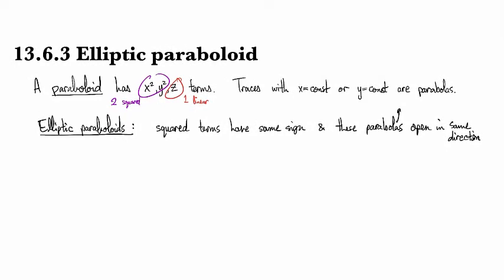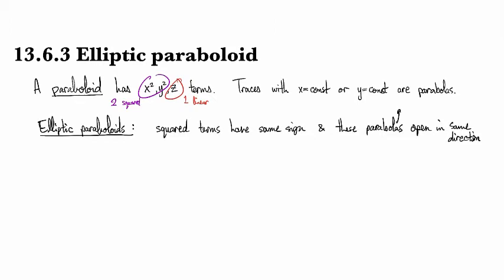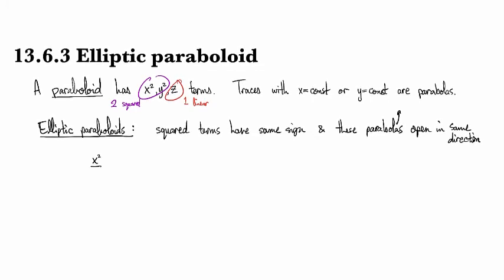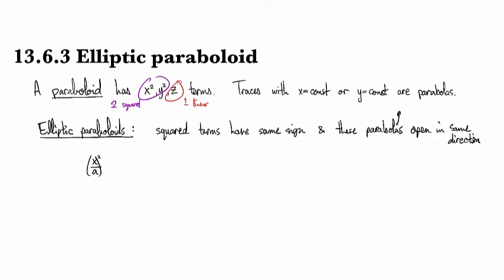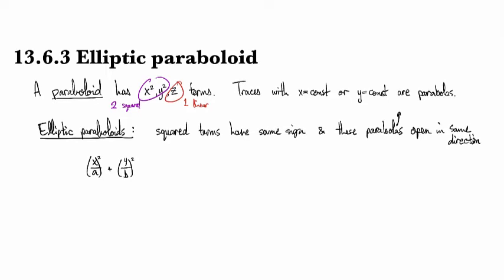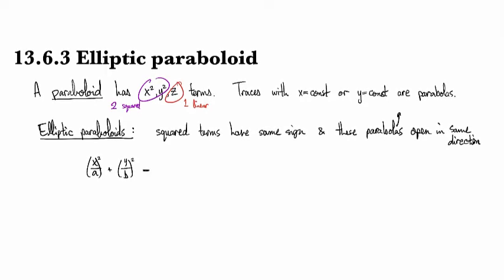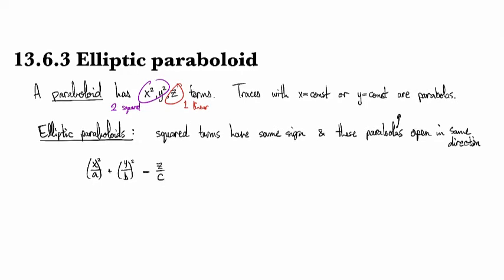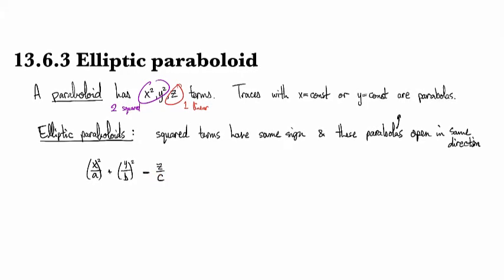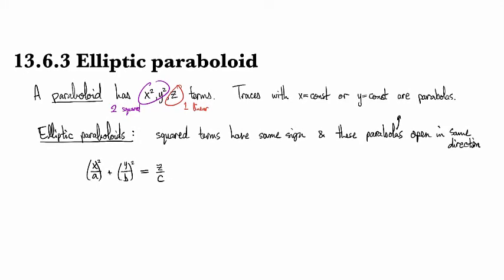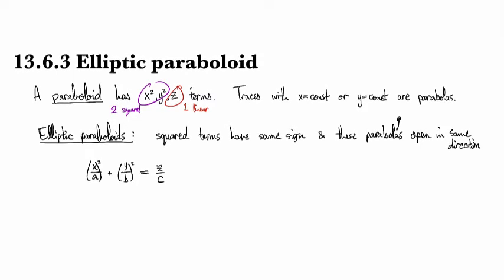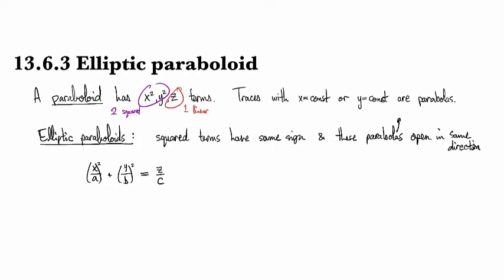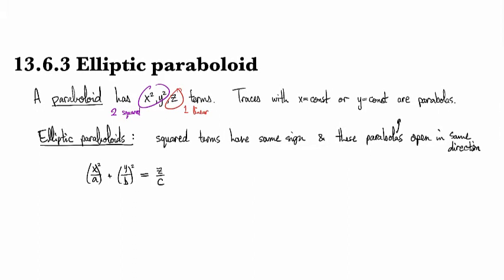So let's look at an example. If we have an equation that has two squared terms and they're both the same sign, then we can write it as x squared over a squared, and then y over b squared equals z over c. And since the x and y both have the same sign, we can assume that they are both positive by multiplying the whole equation by negative 1.